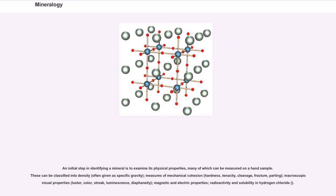An initial step in identifying a mineral is to examine its physical properties, many of which can be measured on a hand sample. These can be classified into density, often given as specific gravity; measures of mechanical cohesion — hardness, cleavage, fracture, parting; macroscopic visual properties — luster, color, streak, luminescence, diaphanity; magnetic and electric properties; radioactivity; and solubility in hydrogen chloride.